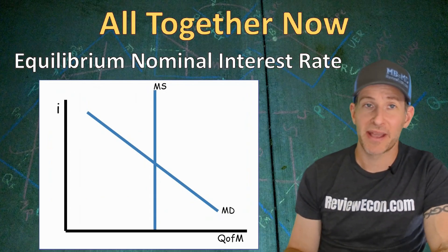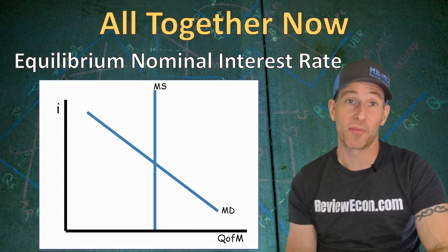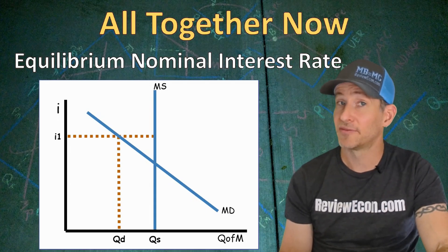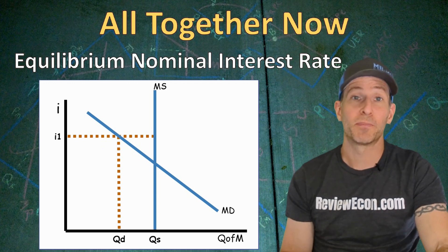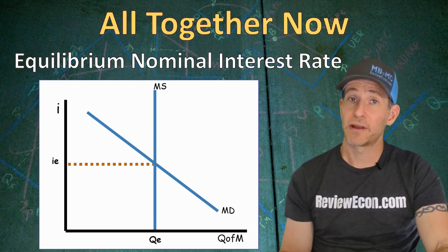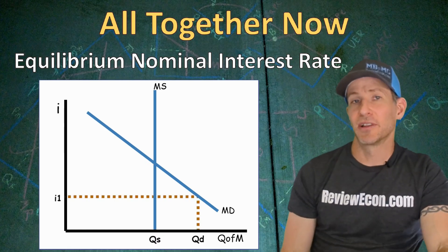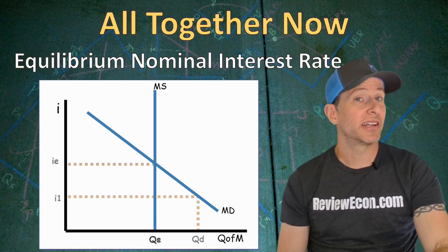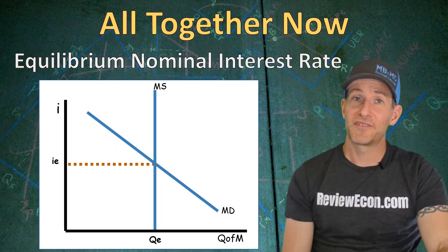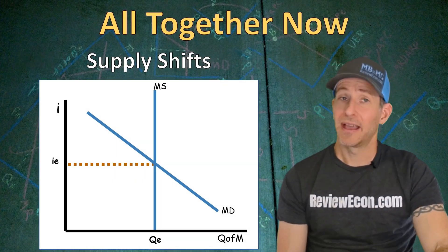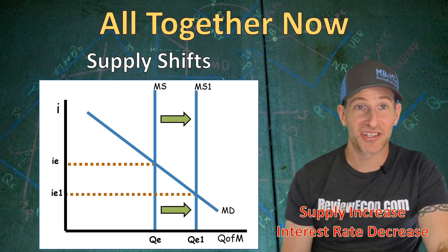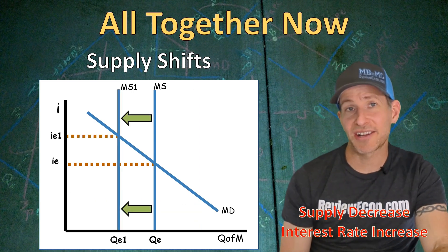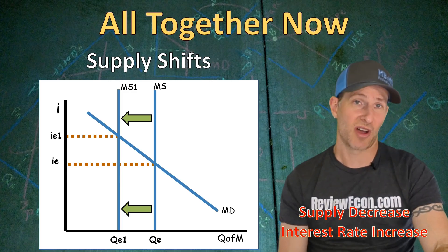When we graph the money supply and money demand curve on the same graph, we can find the equilibrium nominal interest rate. If the interest rate is greater than the intersection, the quantity demanded of money will be less than the quantity supplied, and that surplus of money will push interest rates toward the equilibrium. If the interest rate is below the intersection, the quantity demanded is greater than the quantity supplied, and that shortage will increase the interest rate toward equilibrium. An increase in the money supply will decrease the nominal interest rate, while a decrease in the money supply through contractionary central bank actions will increase the equilibrium nominal interest rate.